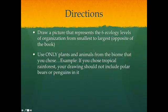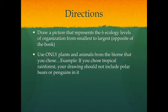You're going to draw a picture that represents all six levels of organization for ecology, from smallest to largest. For your picture, use the information you gathered for your specific biome — plants and animals that would only be found in your biome. For example, if you chose a tropical rainforest, don't draw a polar bear for your organism or population. Use only animals found in your biome — don't mix in cacti, polar bears, penguins, and ice in a tropical rainforest.